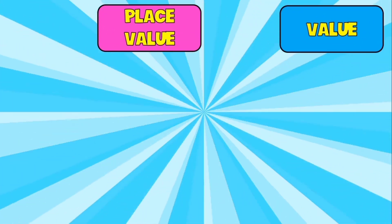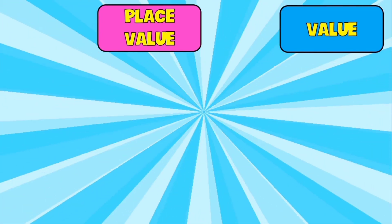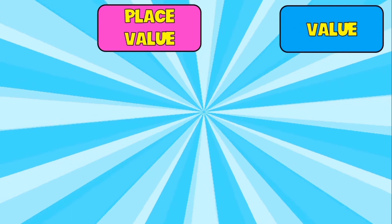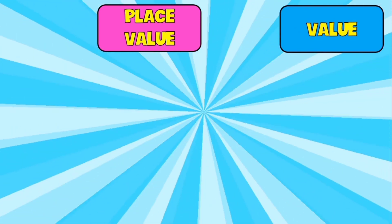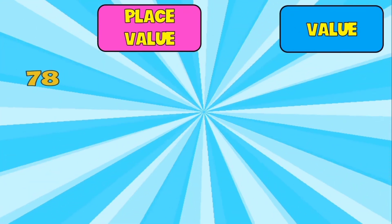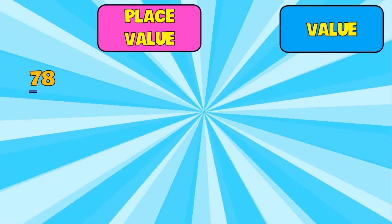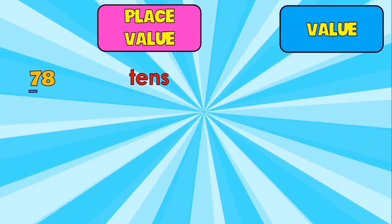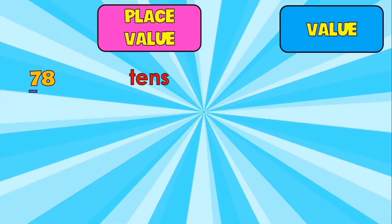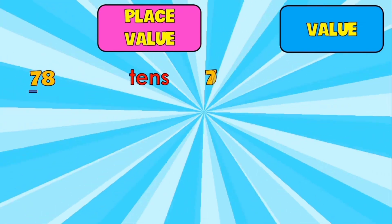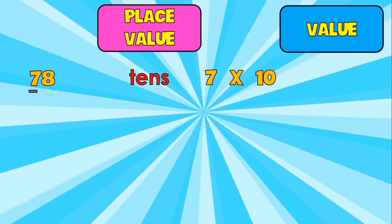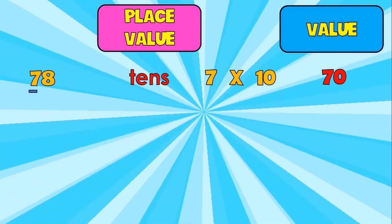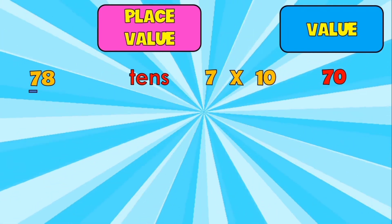I hope that with the help of the place value chart, you now know how to identify the place value of a digit in a number. Now, I will be teaching you how to identify the value of the digit in a number. Let's have the number 78. What is the place value of 7? It's tens. So, how do we get the value? Let's take 7 and multiply it by 10 since it's in tens place. 7 times 10 is 70. So, the value of 7 is 70, and its place value is tens.